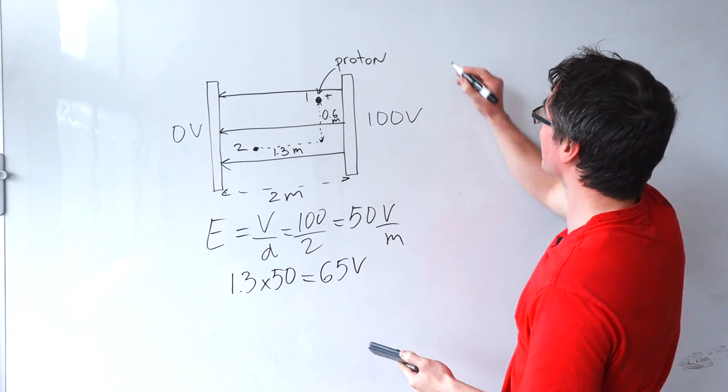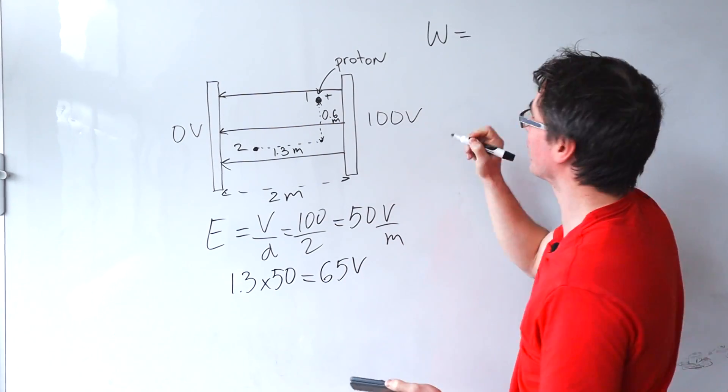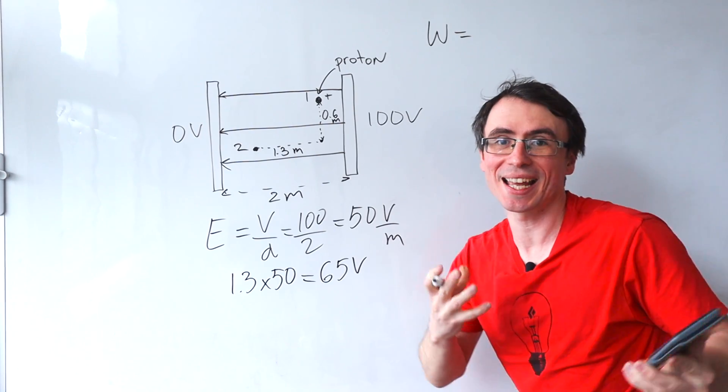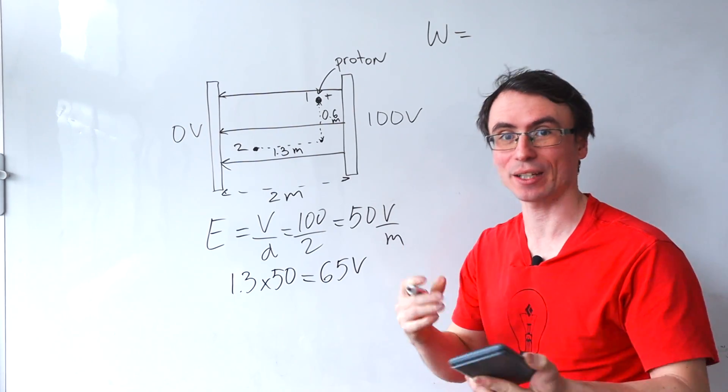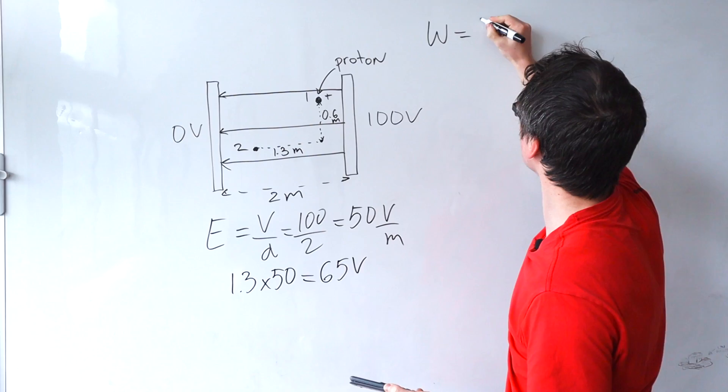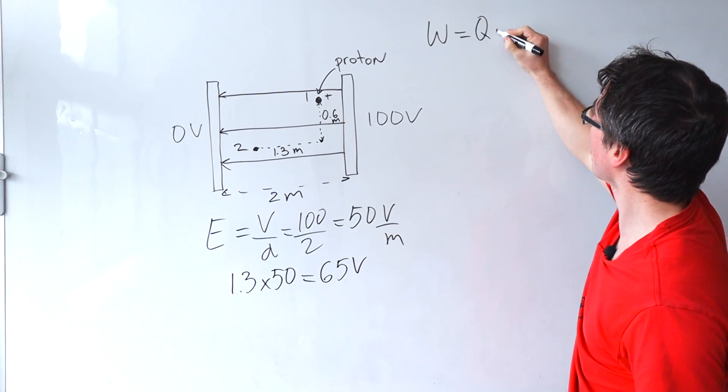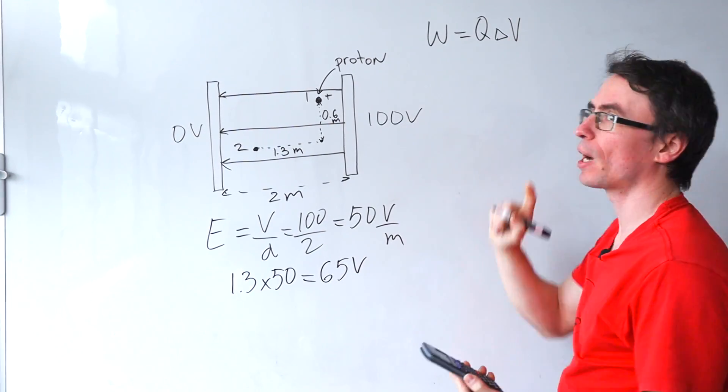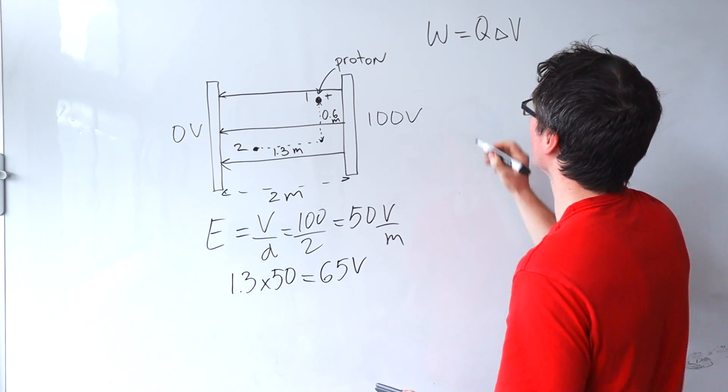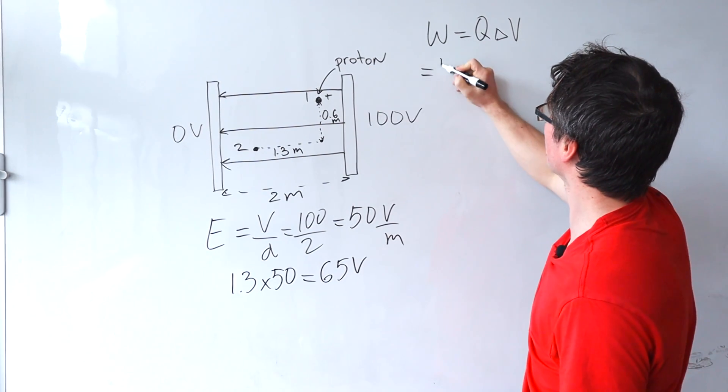And now all I need to do is use my equation that work done and hence energy electrical potential energy is equal to my charge multiplied by my potential difference.